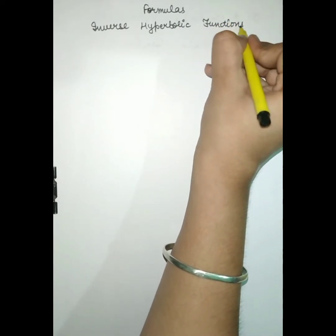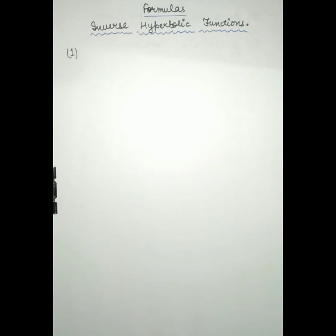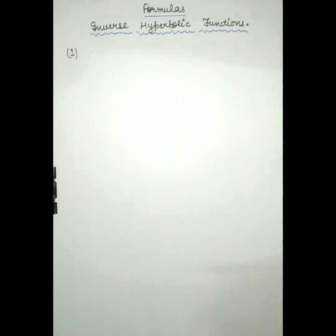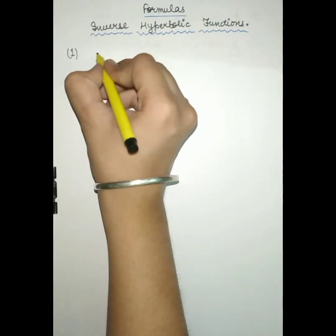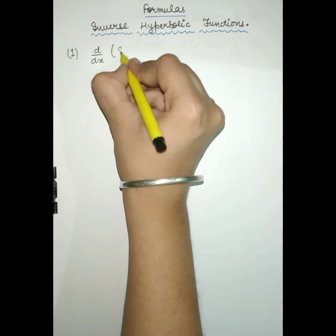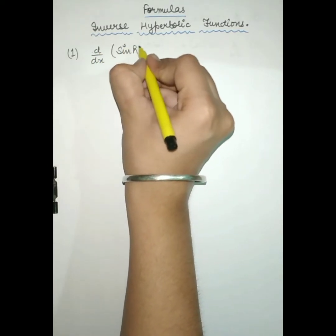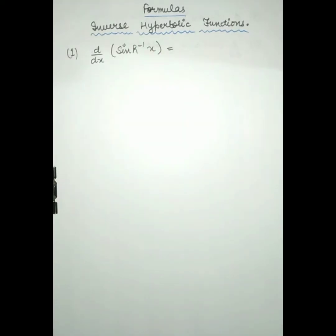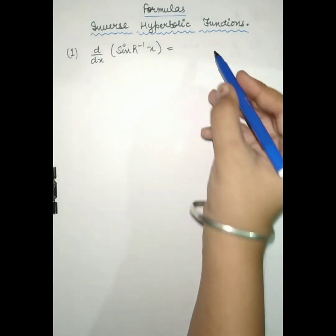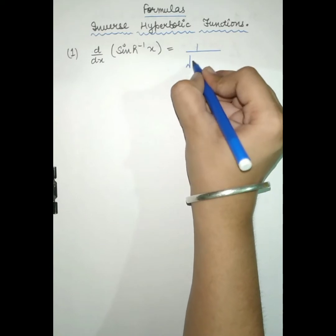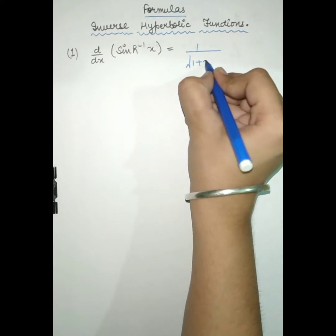Now let us start with the first formula. The derivative of sin hyperbolic inverse x is equal to 1 upon root of 1 plus x square.